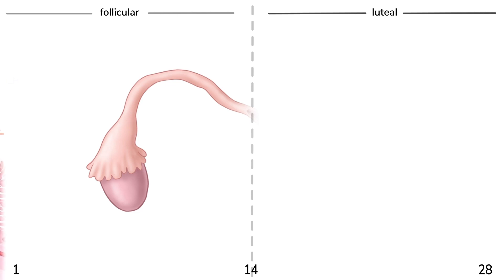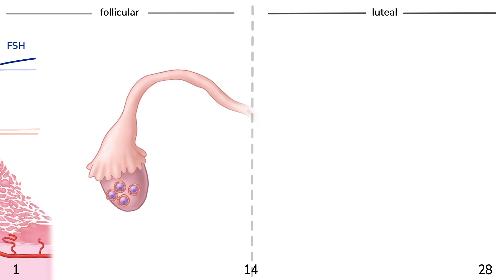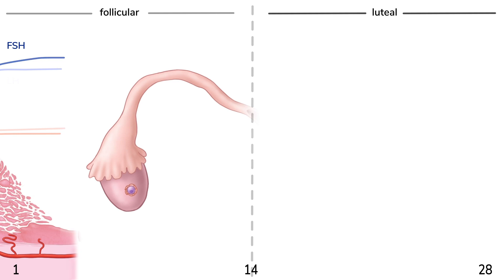During the follicular phase, FSH is released in response to pulsatile GnRH secretion, which stimulates follicles in the ovaries to grow. This makes sense, as FSH stands for follicle stimulating hormone. One of these follicles becomes the dominant follicle, and this is the follicle that will go on to be ovulated.